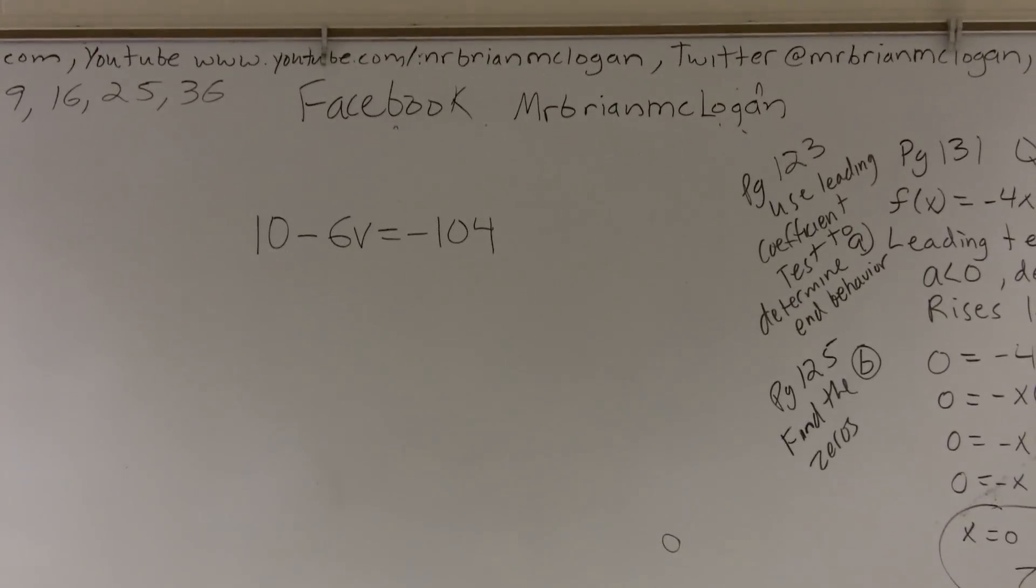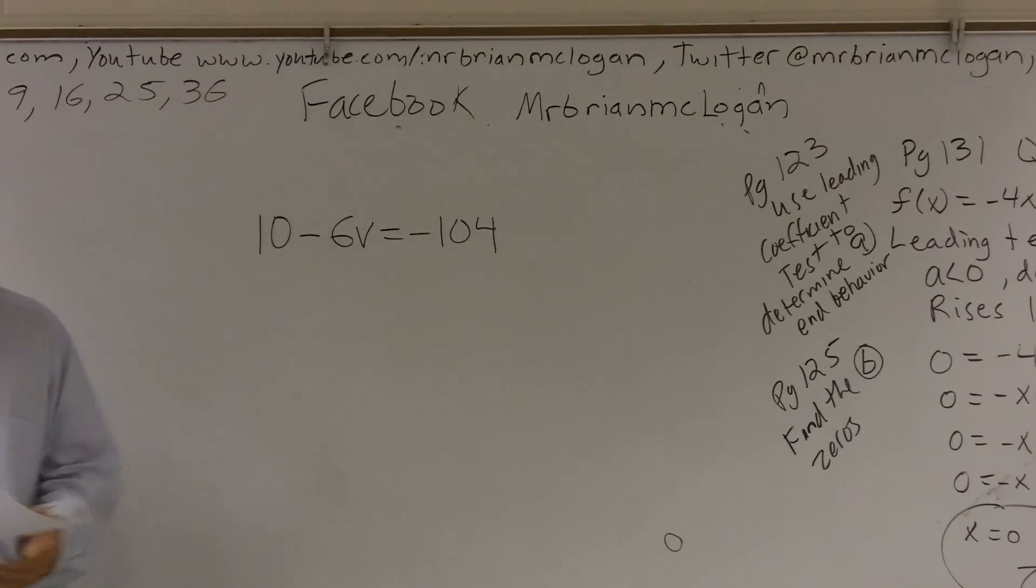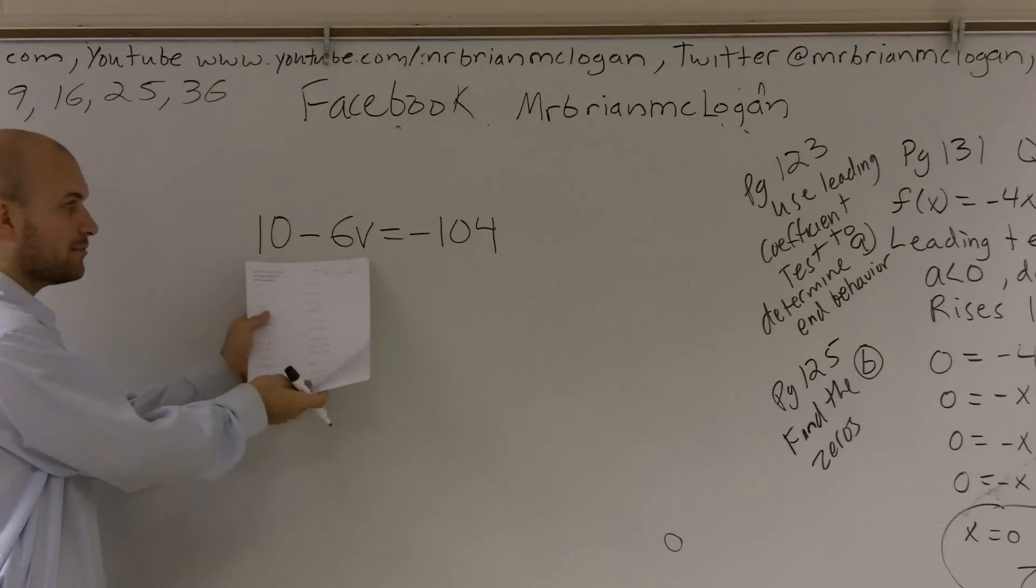Just for Warren, on this problem, we have an equation with a variable v. For our variable v, we need to get variable v by itself. That means we need to get rid of everything that's on the side of variable v.